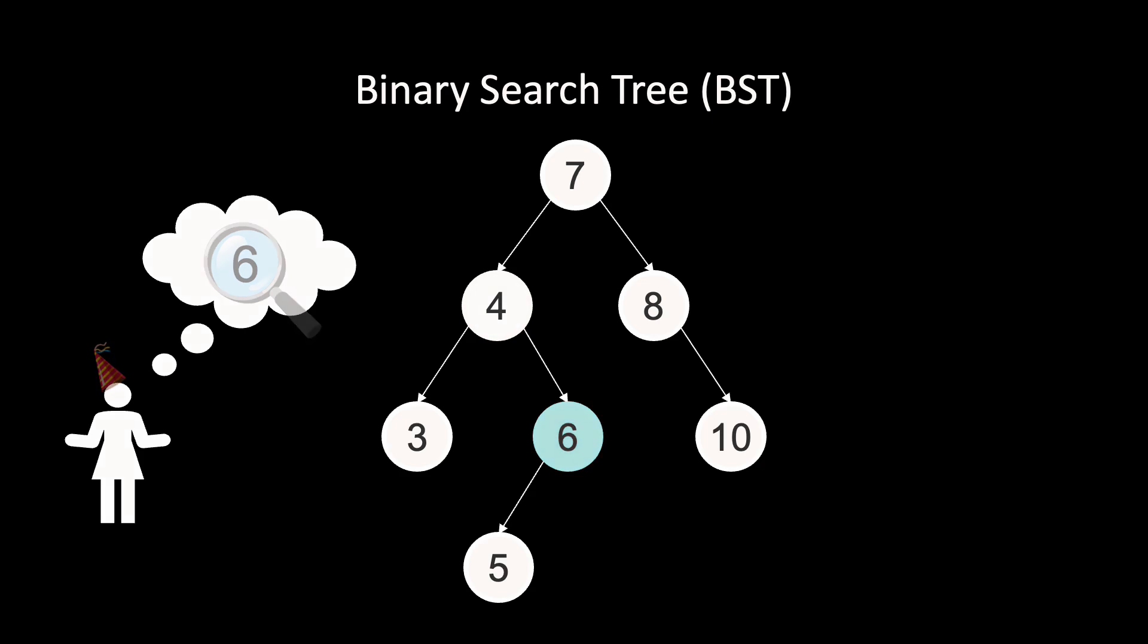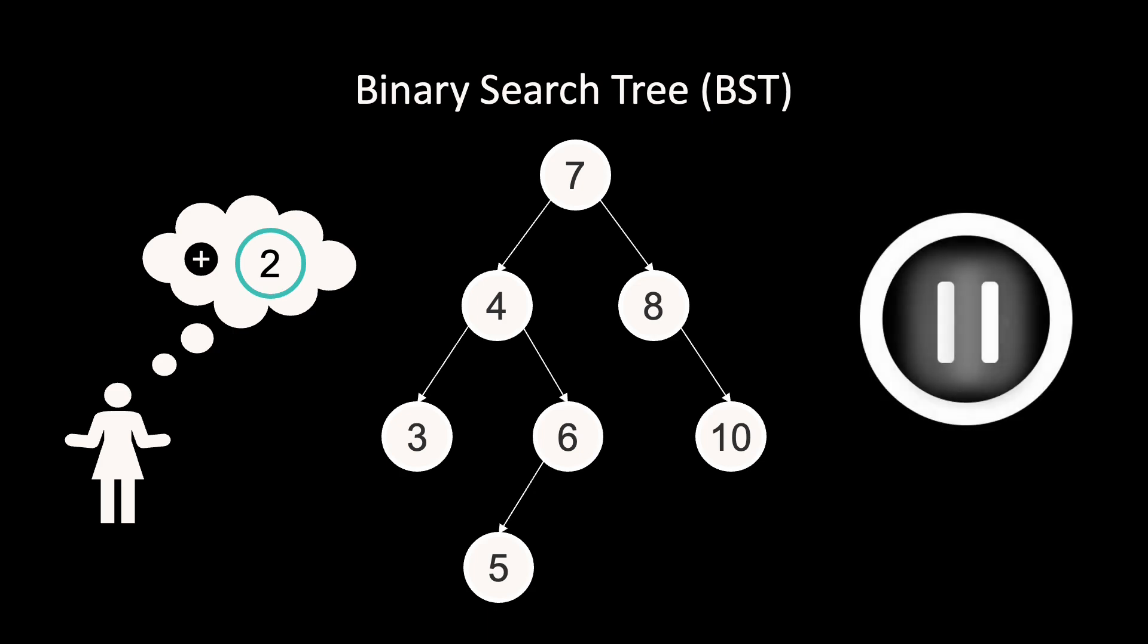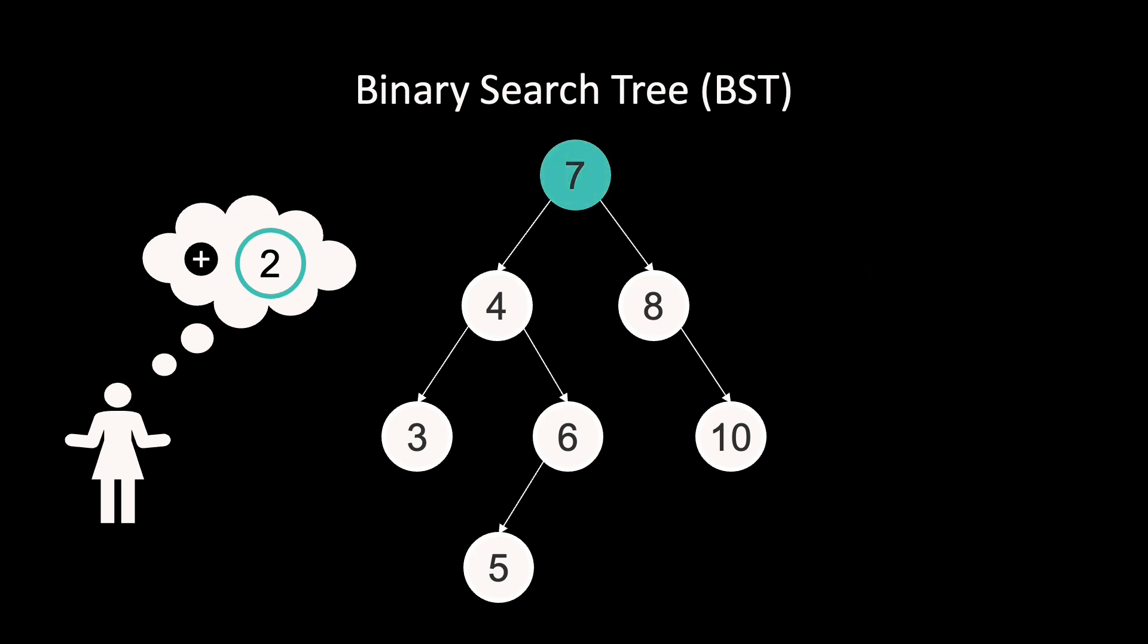If we want to add keys to the dictionary, we need an insert function. How would you go about inserting the key 2 in this search tree? If we want to insert a key, we run a normal search and then insert the key in the first empty spot we find. If we find a node that already has the key, then we do not insert anything because every key should be unique.